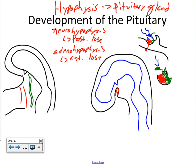Both of these lobes do not originate and develop within the brain. They develop in separate areas and wind up joining together during embryonic development. That's an important concept because it means both lobes not only produce different hormones, they're regulated differently as well. One lobe originates in the brain, and one originates in the upper pharynx.